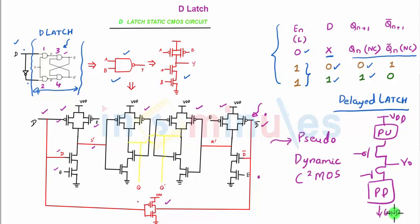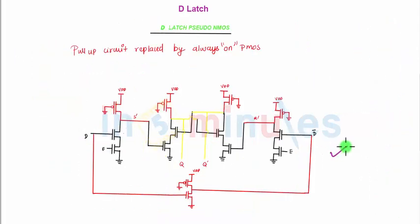Let's quickly see all these diagrams. As on the previous slide for the static style, just replace the pull-up with a PMOS which is always on. That means its input is grounded. So this is nothing but a D-latch in pseudo-NMOS style.